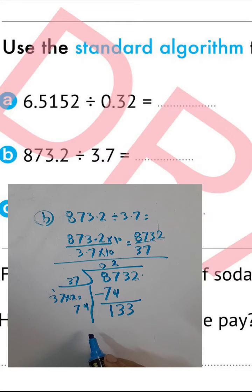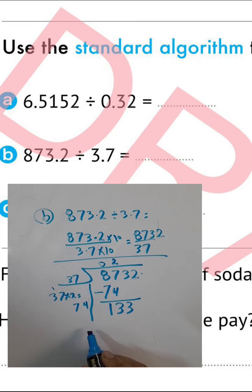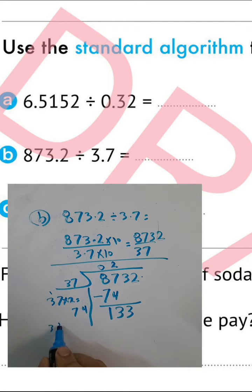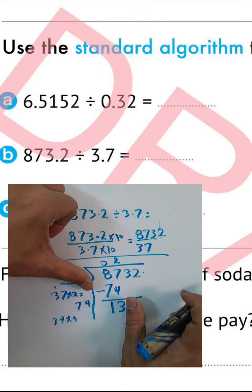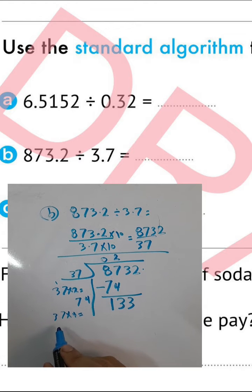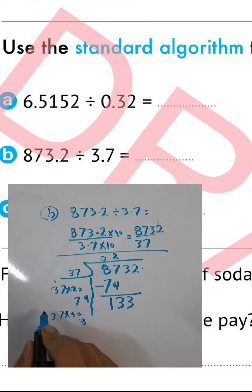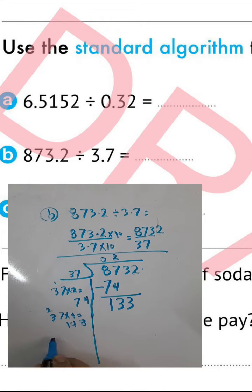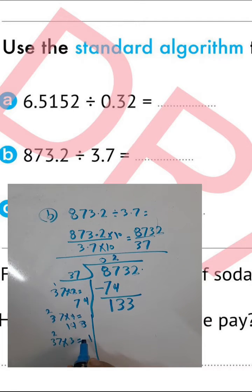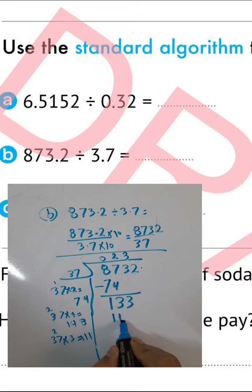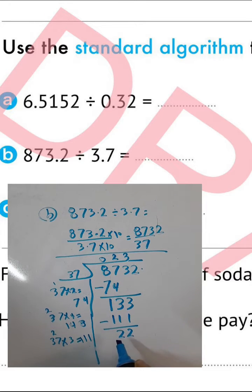133 divided by 37: digit by digit 13 divided by 3 gives 4. 37 times 4: 4 times 7 equals 28, write 8 carry 2; 3 times 4 equals 12, plus 2 equals 14 — that's too large. So try 37 times 3: 3 times 7 equals 21, write 1 carry 2; 3 times 3 equals 9, plus 2 equals 11 — also too large. Try 2: 37 times 2, then drop 2 here.